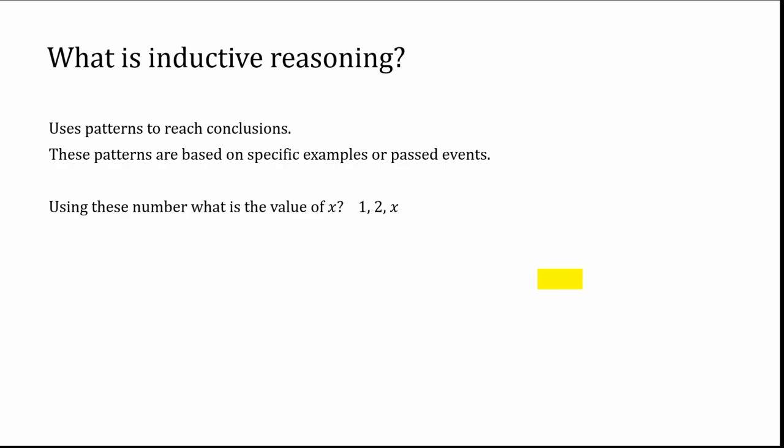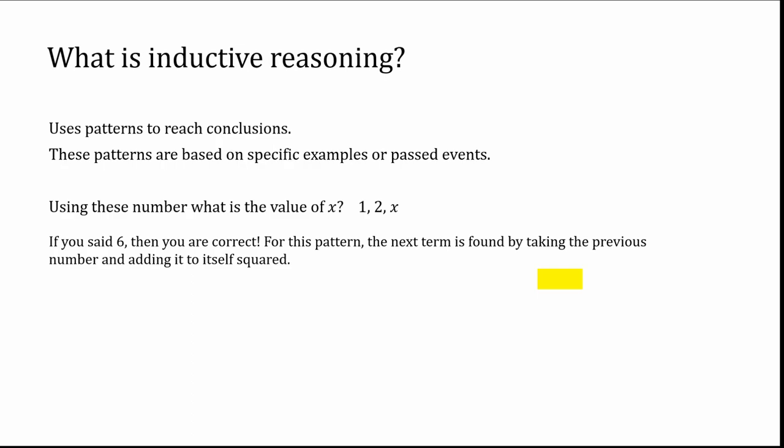If you chose 6, you are correct. It looks like the obvious answer would be 3 — 1, 2, 3, add 1 each time. Arithmetic sequences fall into those types of patterns. But for inductive reasoning, if we do not have three pieces of data, we do not make a conjecture, because there are too many things that can throw us a curveball. For this pattern, the next term is found by taking the previous term and adding it to itself squared.